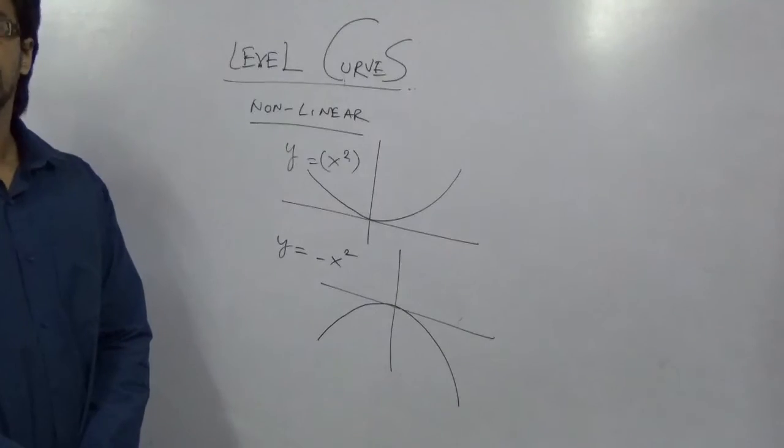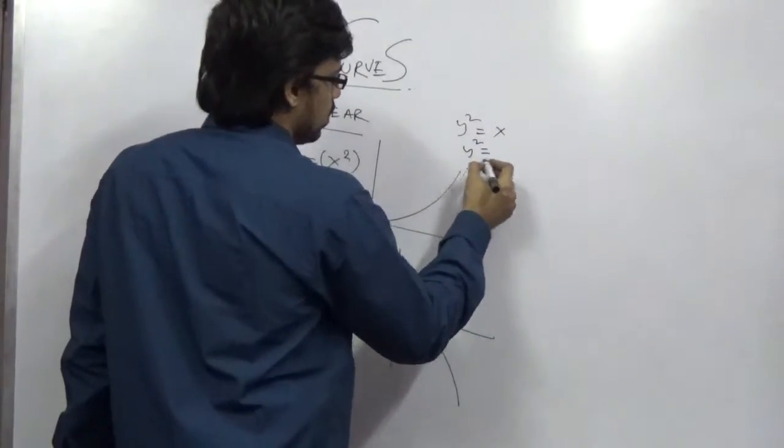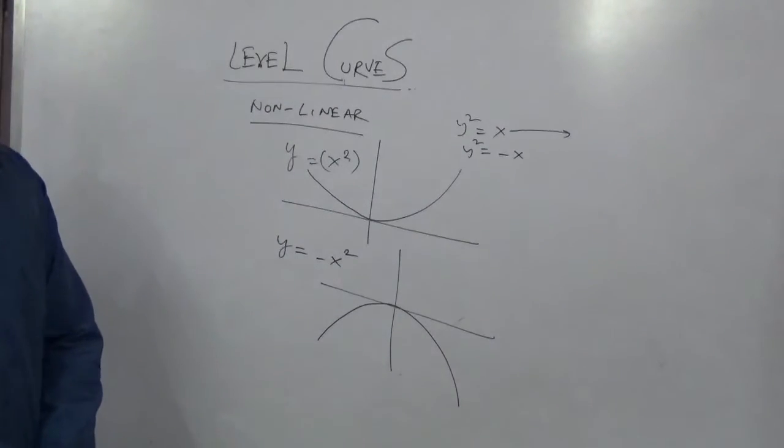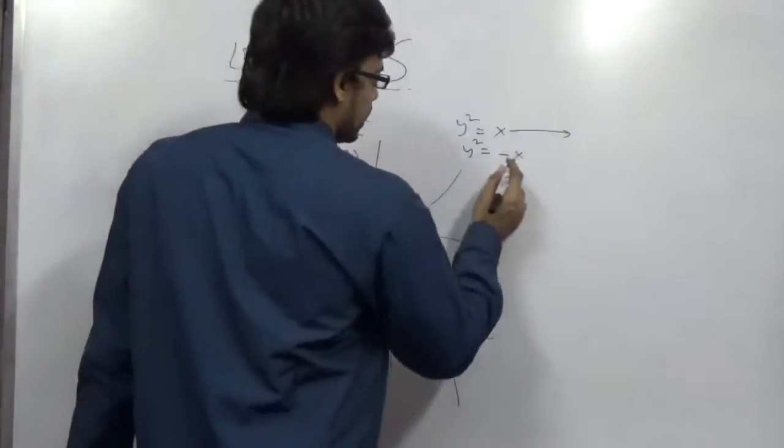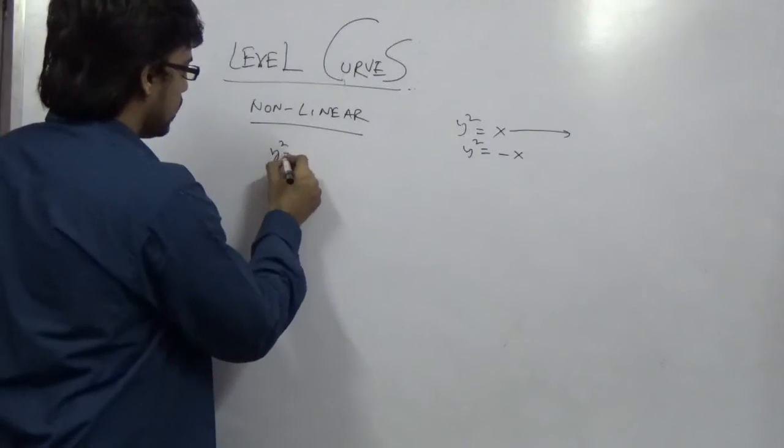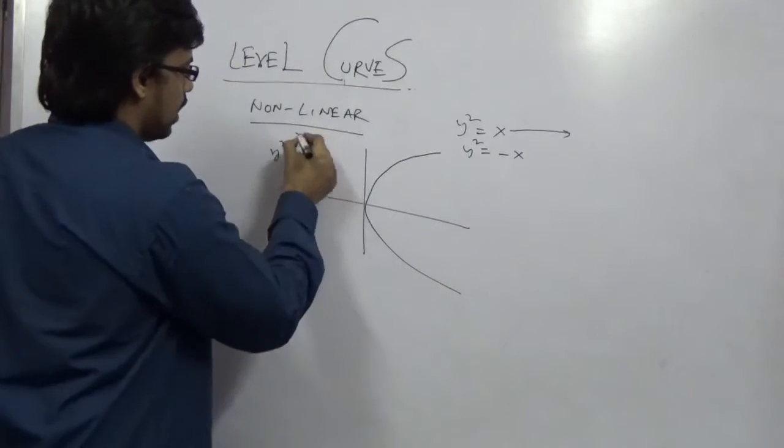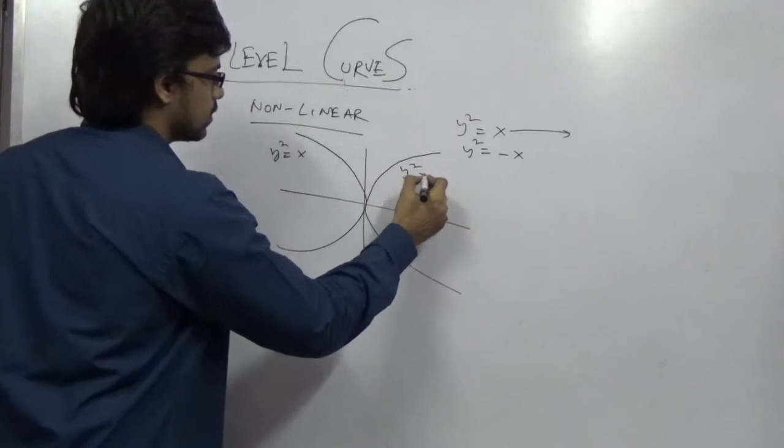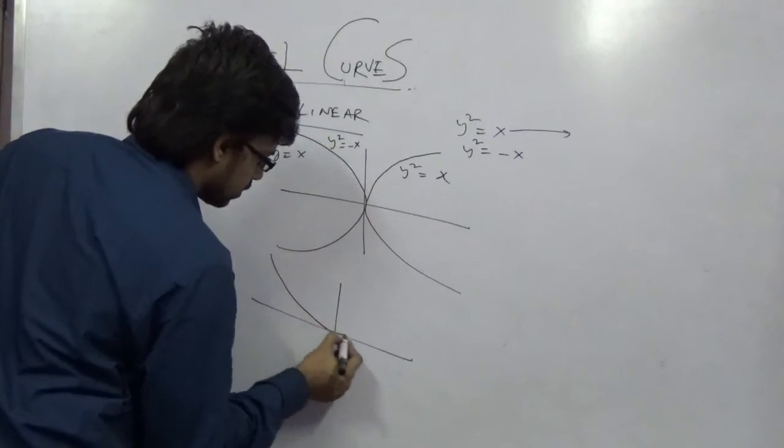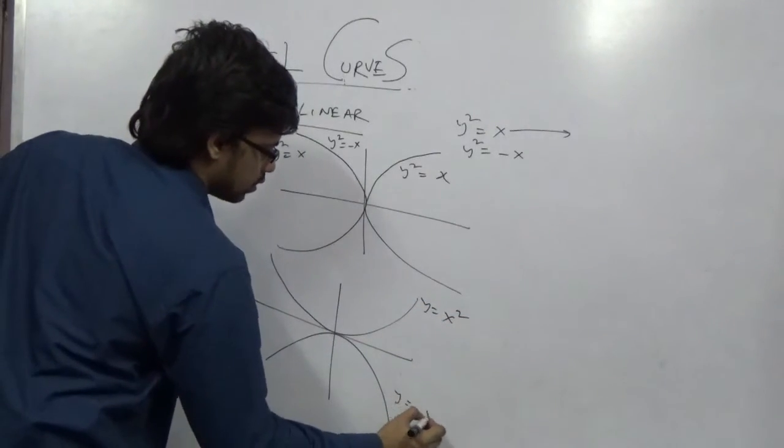There will be another two parallel diagrams in this concept: y square equal to x and y square equal to minus x. In y square equal to x, this diagram is very easy again. Here you have to draw it. In y square equal to x, you have to draw it like this. And y square equal to minus x is this. And in the previous diagram the structure is y equal to x square and y equal to minus x square.